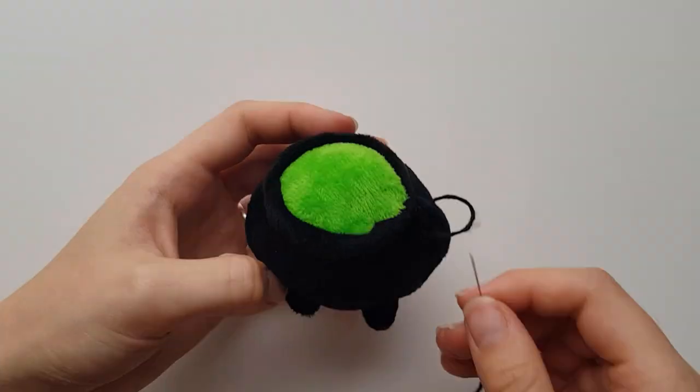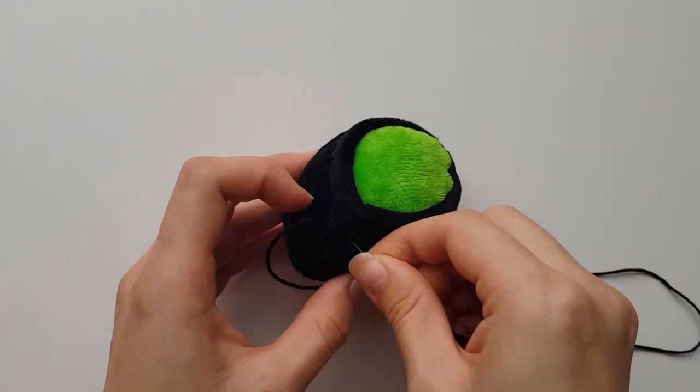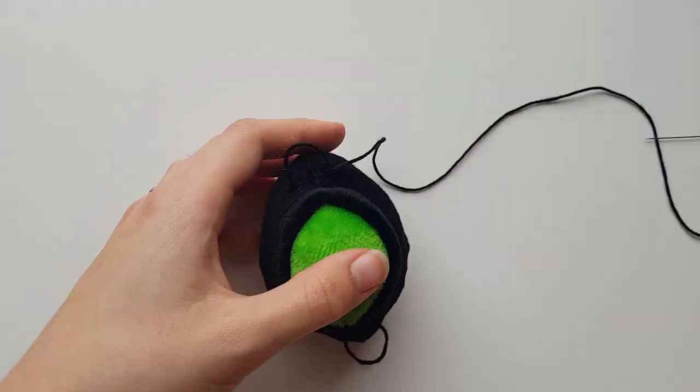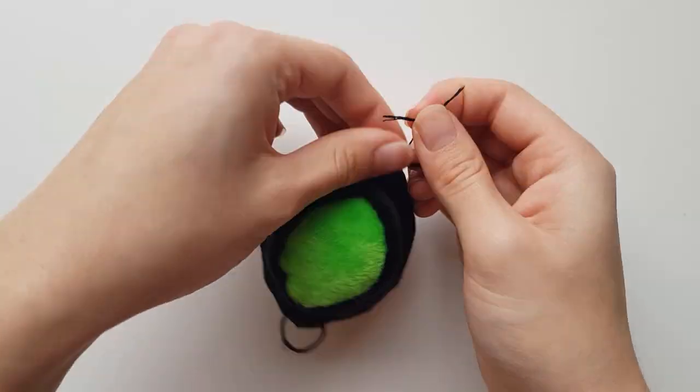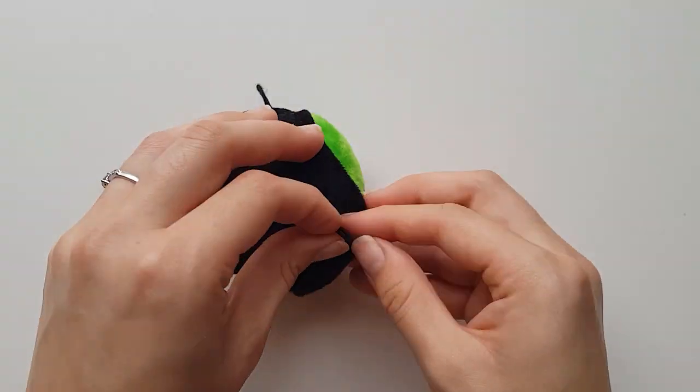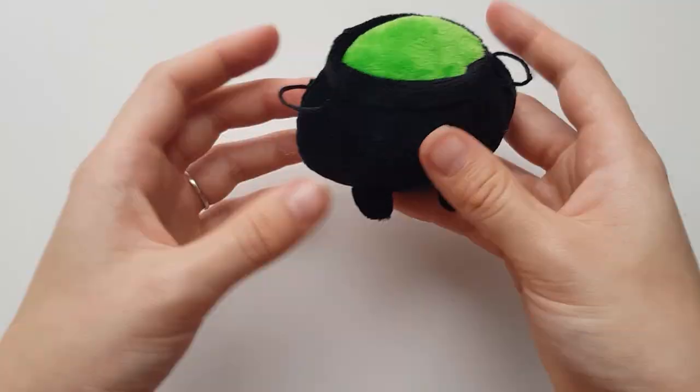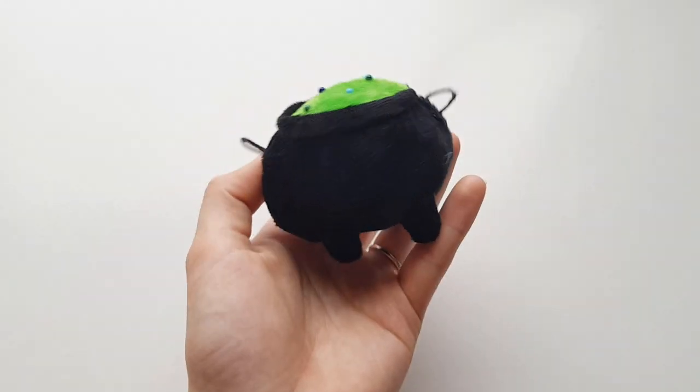Repeat the same with the second side. And that is how you make a little cauldron pincushion.